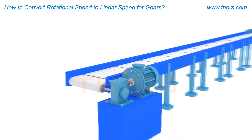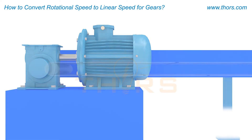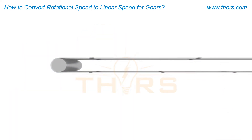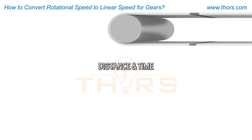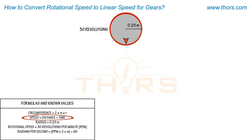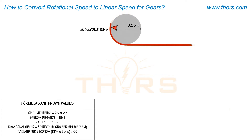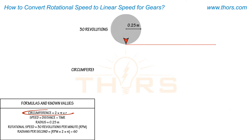To begin conversion from rotational to linear speed, you need two data points: distance and time, because speed is equal to distance divided by time. For each revolution of the drum, the equivalent linear distance the belt travels will be equal to the drum circumference. Calculate circumference by multiplying two by pi by r.